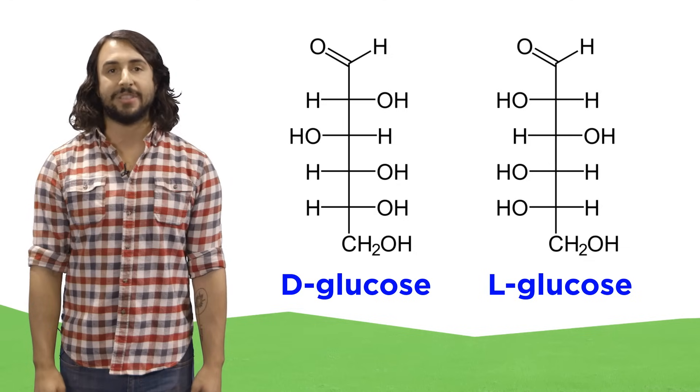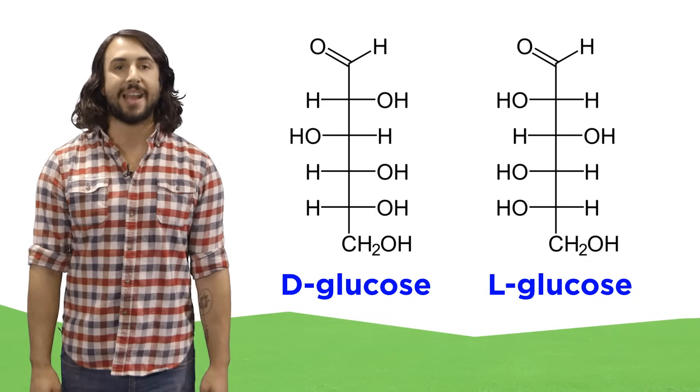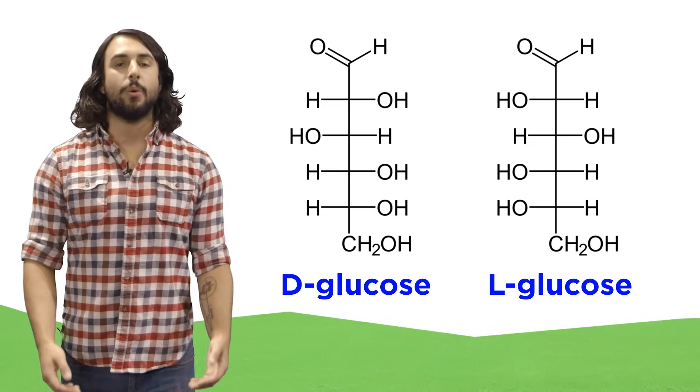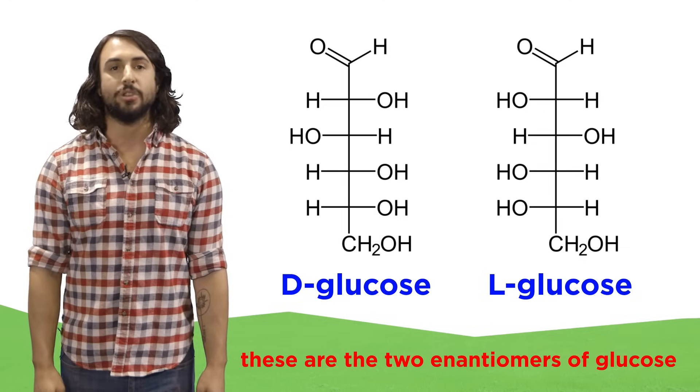This terminology is a bit more outdated than the R and S we use to assign absolute configuration, but the convention has stuck around, and it remains the way that we differentiate between enantiomers of sugar molecules.